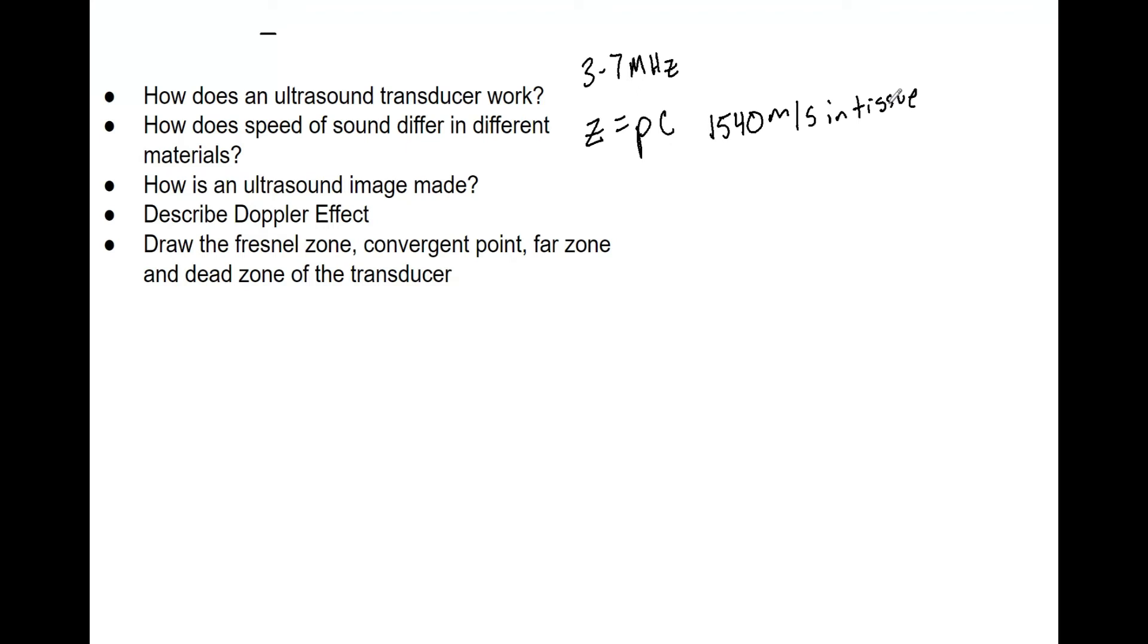The Doppler effect measures the speed of moving objects in Doppler ultrasound. The frequency of the wave increases if it's moving toward and vice versa. The Doppler effect equation: the change in frequency equals two times the initial frequency multiplied by the velocity, all divided by the speed of sound.